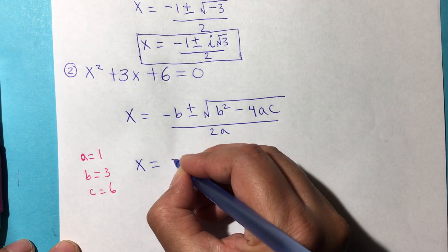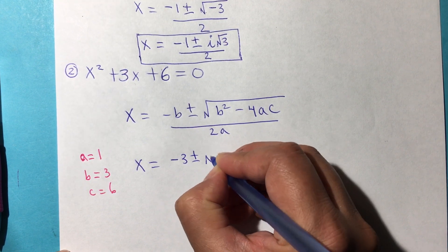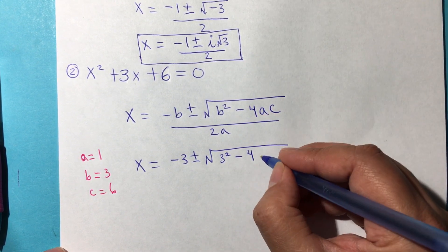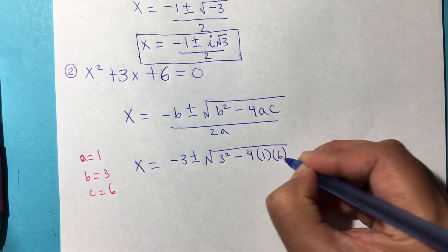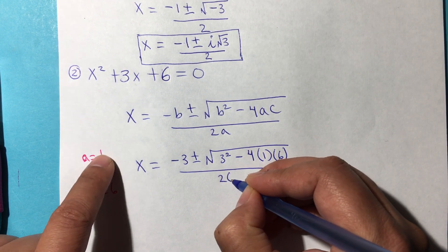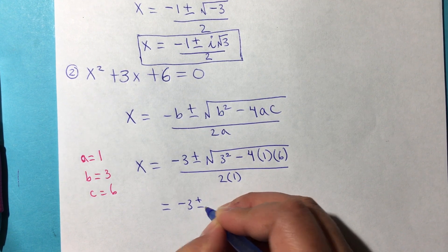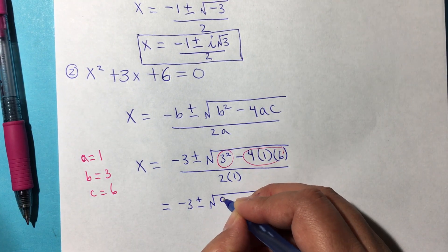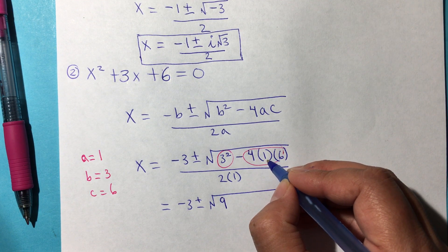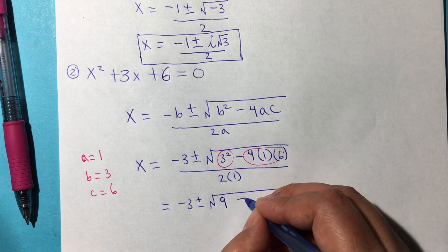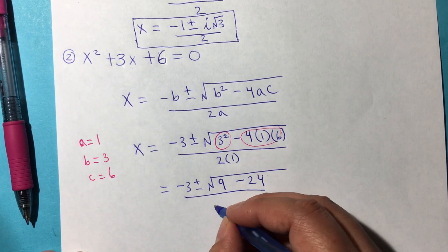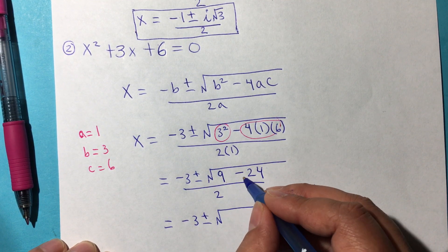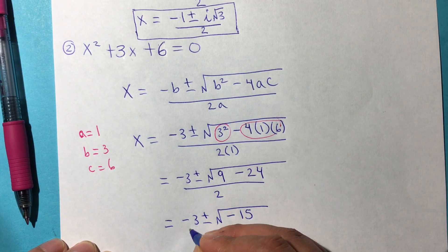So x is equal to negative b, so negative 3, plus or minus the square root of b squared, meaning 3 squared, minus 4 from the formula, times a, which is 1, times c, which is 6, divided by 2 times a, 2 times 1. That gives us negative 3 plus or minus the square root of — we can simplify these two parts now. 3 squared means 3 times 3, which is 9. Negative 4 times 1 is negative 4, times 6 is negative 24, divided by 2 times 1 is 2. That gives us negative 3 plus or minus the square root of 9 minus 24, which is negative 15, divided by 2.